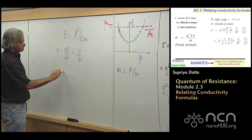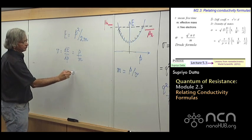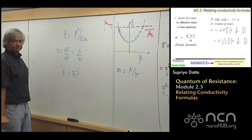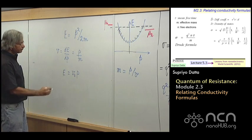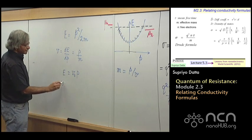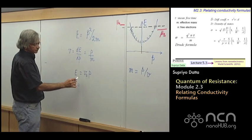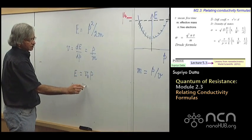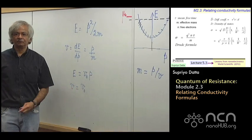On the other hand, if you are talking of, say, graphene, where e is equal to v0 p, then you will notice, actually, velocity is constant. This dE dp is just a constant number, v0. It's independent of momentum.